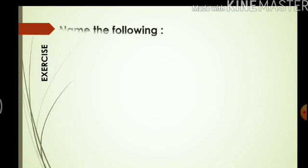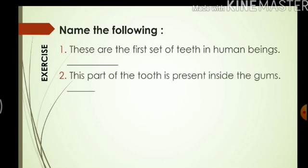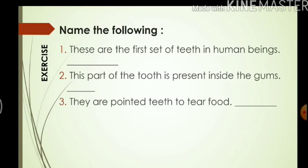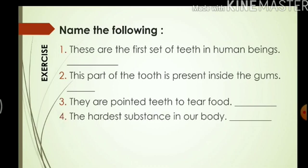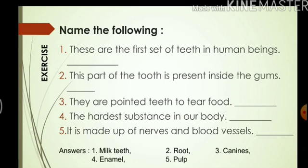The next question is: Name the following. The first set of teeth in human beings — answer: milk teeth. The part of the tooth present inside the gums — answer: the root. Pointed teeth used to tear food — answer: canines. The hardest substance in our body — answer: enamel. The part made up of nerves and blood vessels — answer: pulp.